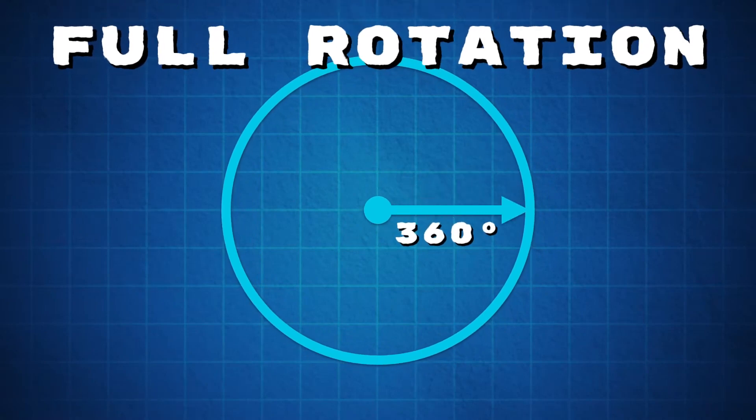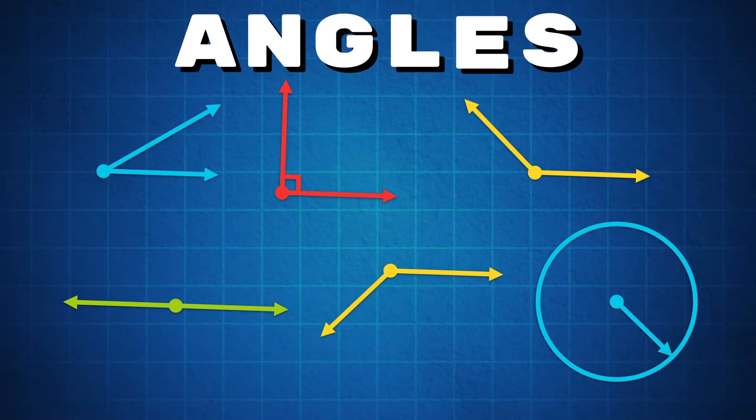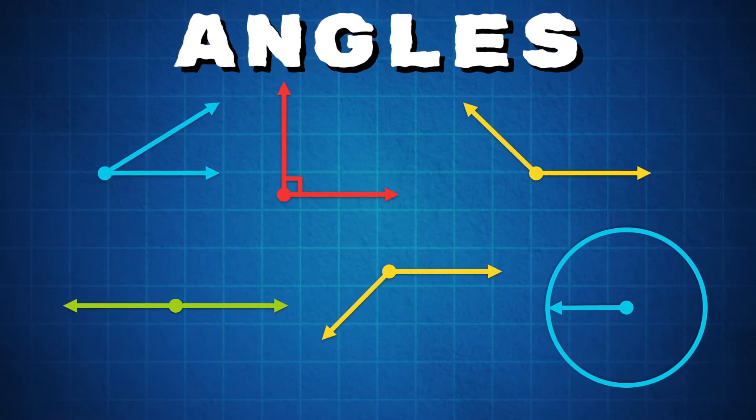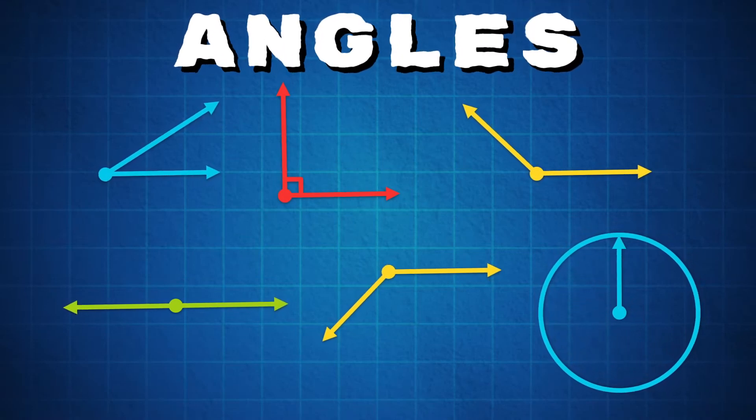These are the types of angles you most commonly see. We'll name them off one by one in order by degree.